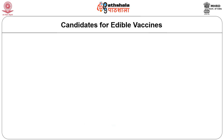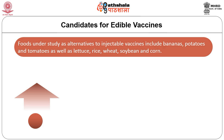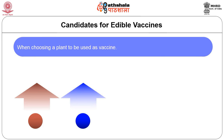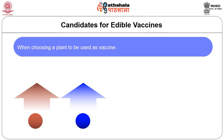Now we shall look at the possible candidates for edible vaccines. Foods under study as alternatives to injectable vaccines include bananas, potatoes, tomatoes, lettuce, rice, wheat, soybeans and corn. When choosing a plant to be used as a vaccine, it should be hardy and palatable with high nutritive value and protein content.